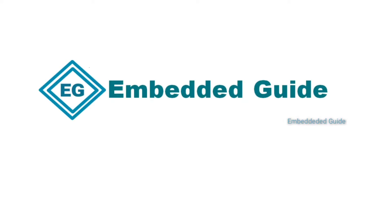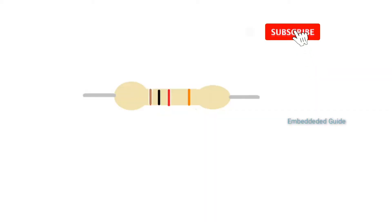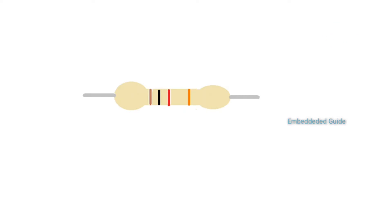Hi friends, welcome to Embedded Guide. This is our topic today about Resistor Color Coding. In general, we have different types of resistors, like 10 ohm, 100 ohm, 200 kilo ohm, and other different resistors. When we have different colors, we define this color coding for the resistor values. That is what we do today in this video.